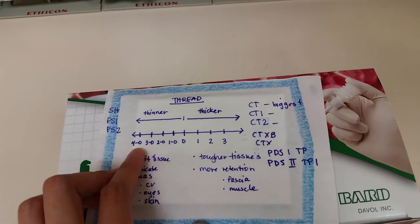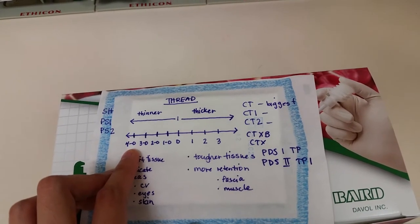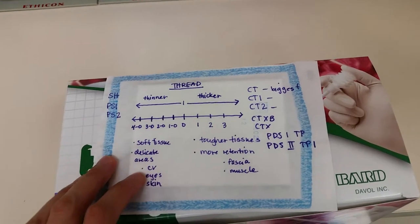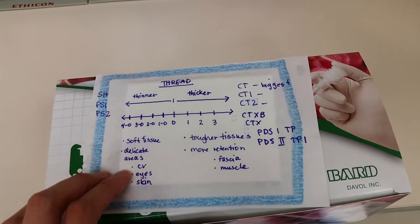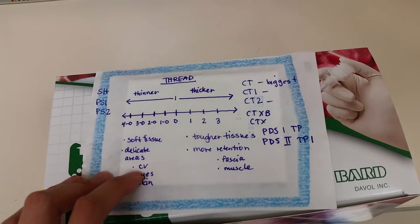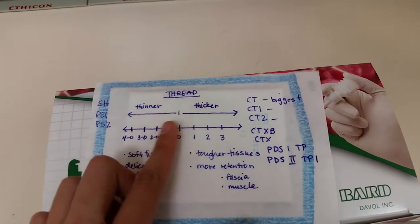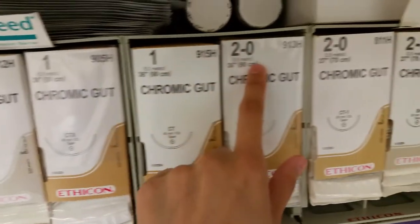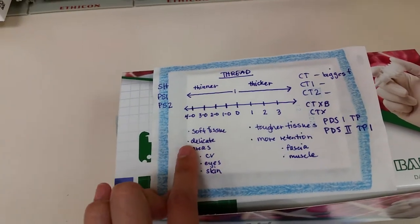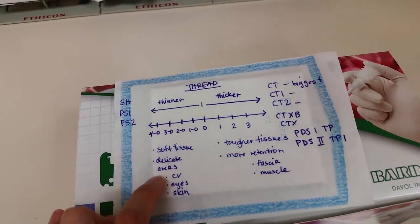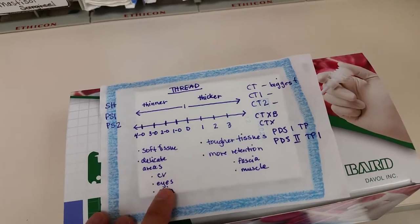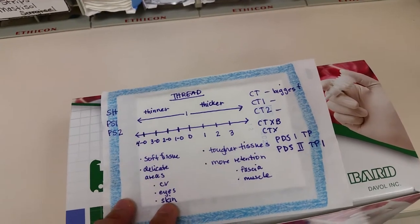8-0 is literally thinner than your hair, so they're a little harder to manage — if you lose those sutures, you will never find them on an x-ray. Even 6-0 BV1, which we use in cardiovascular, is really hard to keep up with. The more you go left on the number line, the thinner the thread. Thinner threads are used in soft tissues and delicate areas — cardiovascular is 6-0, eyes are 8-0, and the highest I've gone on skin is 4-0.